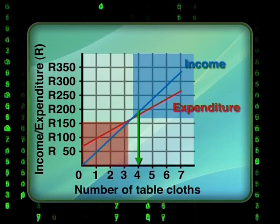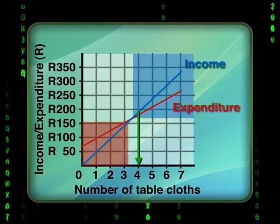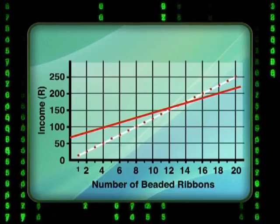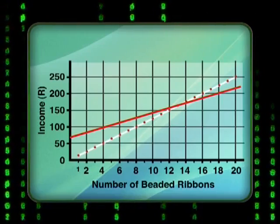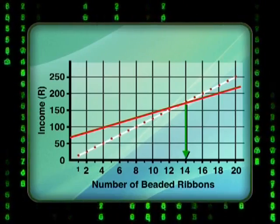Correct! But what puzzles me is that the break-even point is different for each of the items Madi sells. She only needs to sell four tablecloths to pass the break-even point. Yet she needs to sell 14 beaded ribbons before she reaches that break-even point. But why does Madi have to sell more ribbons than tablecloths to get above the break-even point?